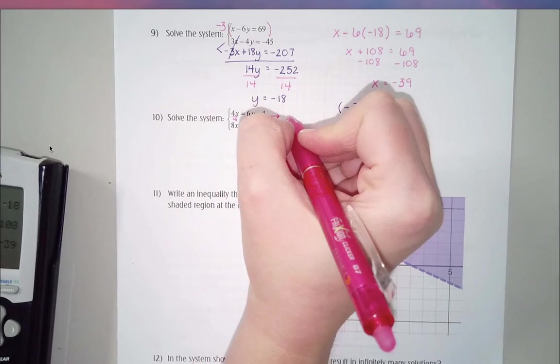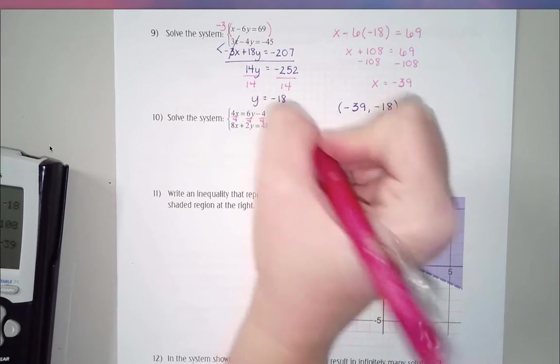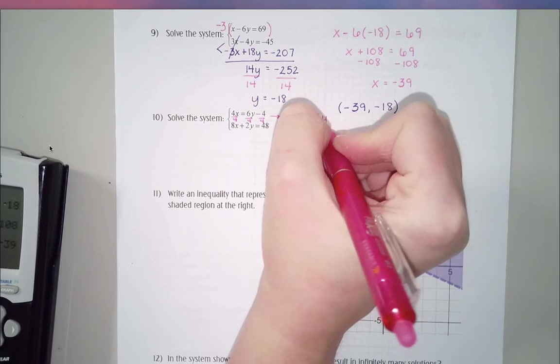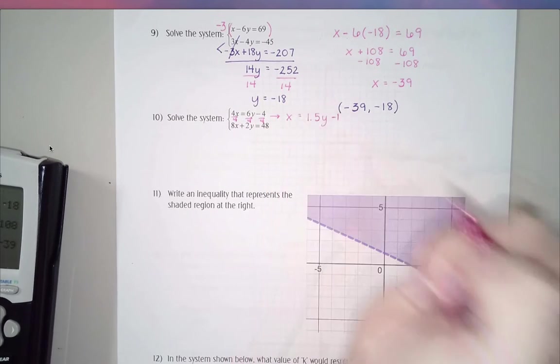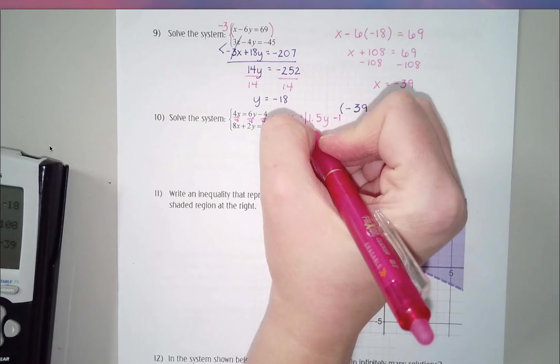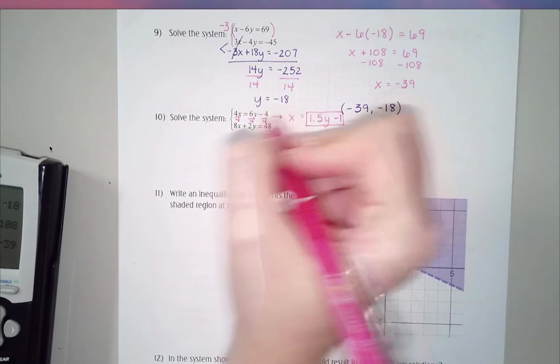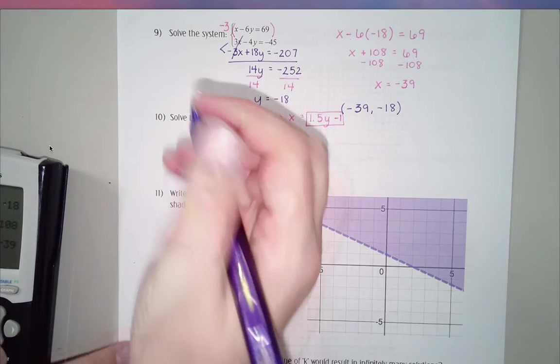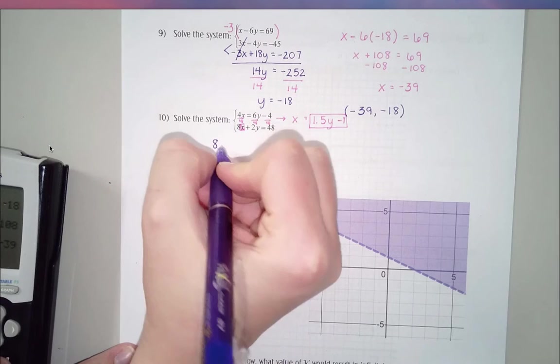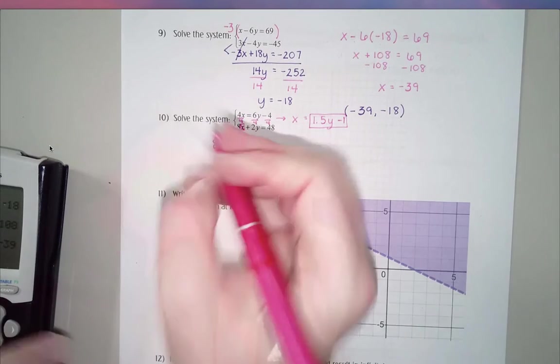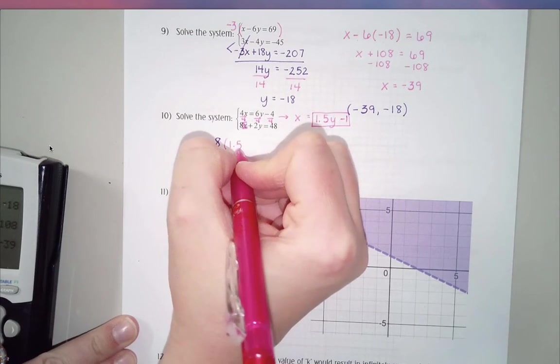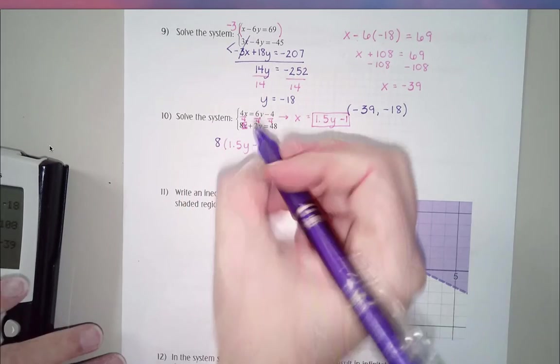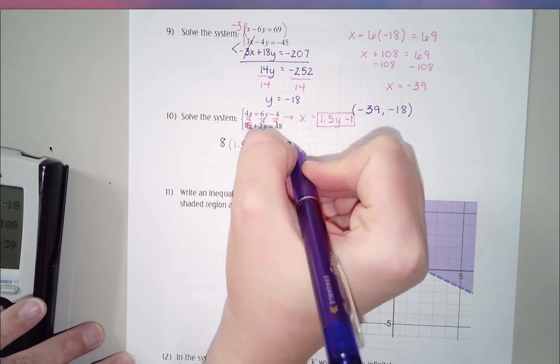I would probably start by taking this equation on top and dividing everything by 4. And then this would become x equals 6 over 4, which is 1.5y minus 1 because 4 over 4 gives me 1. Then I want to take that 1.5y minus 1 and put it in place of x right down here.